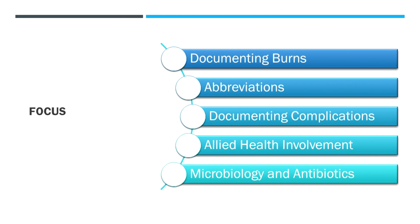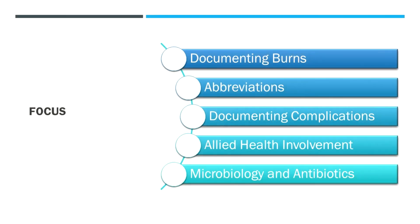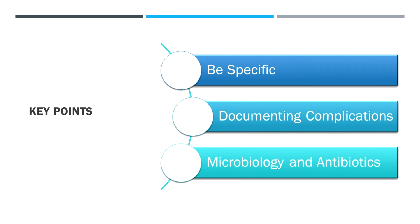We'll be covering how to document burns and initial management, the use of abbreviations and making sure those are appropriately understood. We'll be documenting complications — you'll see common themes in how they influence the complexity of the DRGs that are coded. Burns patients can benefit greatly from allied health involvement because complications are not just medical and surgical in nature; they have a broad range of commonly occurring complications. We'll also talk about microbiology — both colonization and infections — and the antibiotic role in prevention versus therapeutic effect. Key takeaways: be very specific in terminology and documentation, document the broad range of complications, and be clear about microbiology and antibiotics, as those areas are commonly missed or documented poorly.